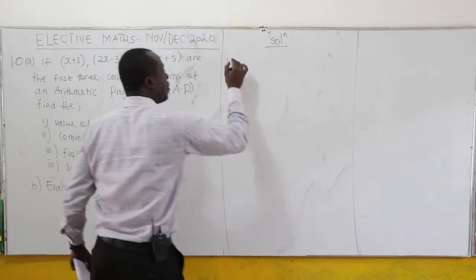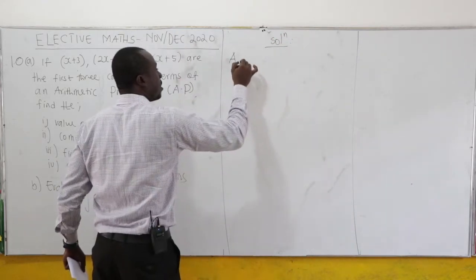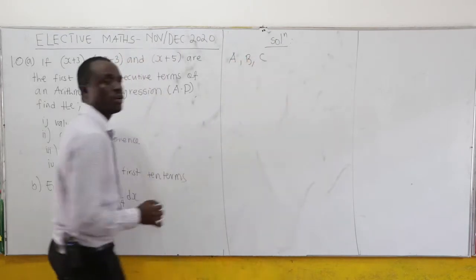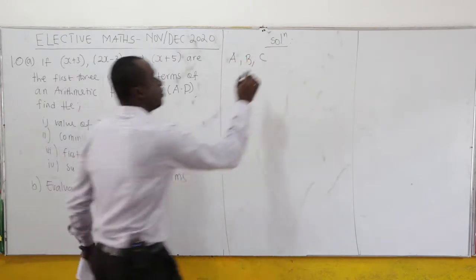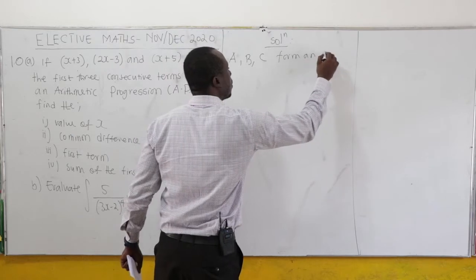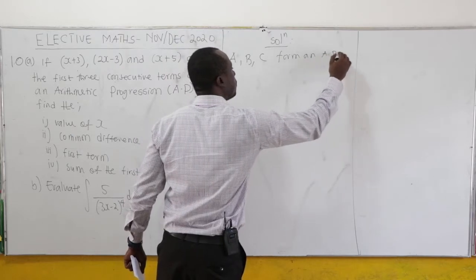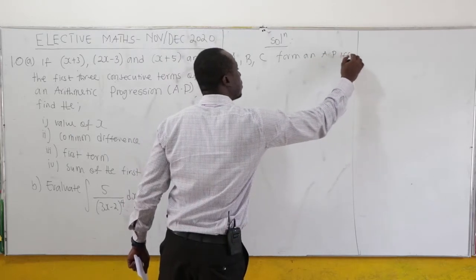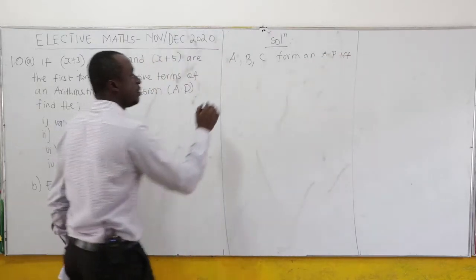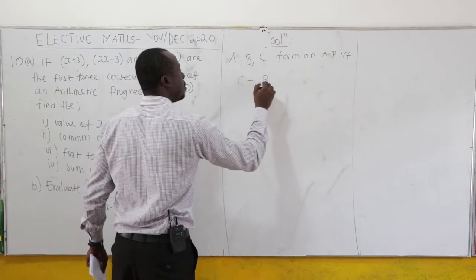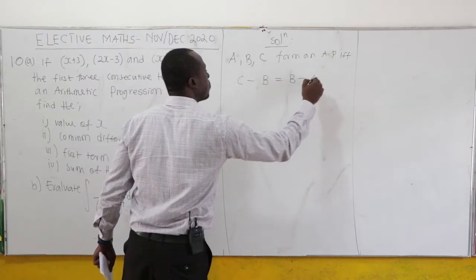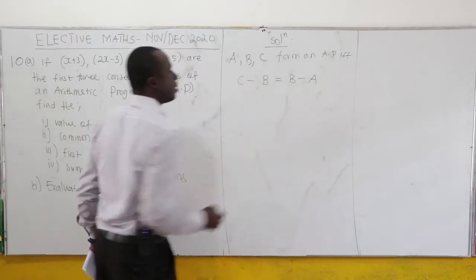Now, if A, B, C form an AP, if and only if c minus b is equal to b minus a.